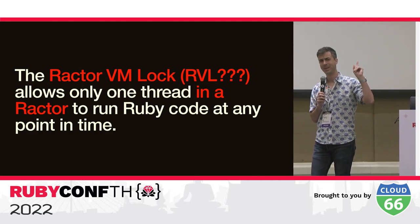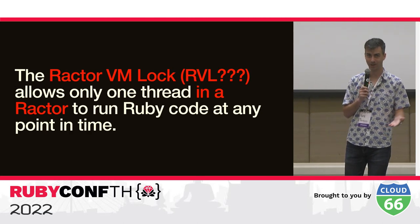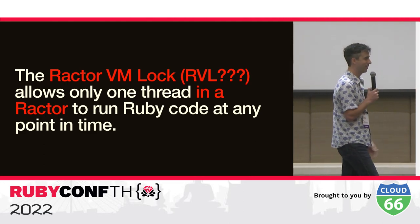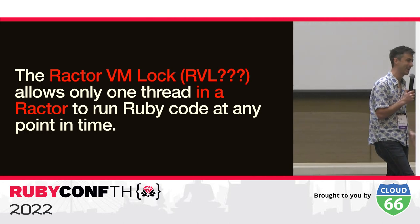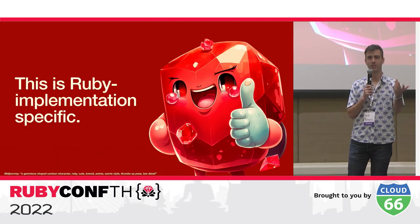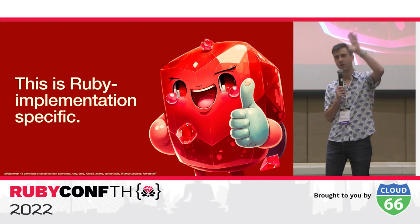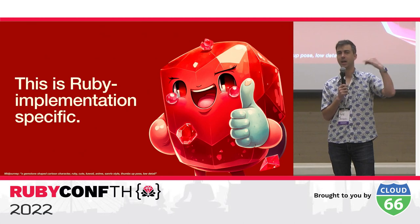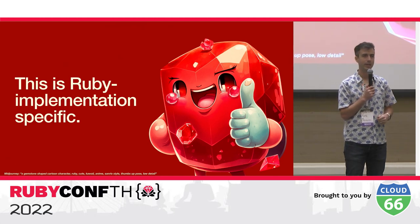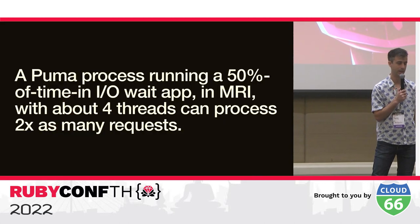In Ruby 3.0 we have Ractors, so technically there's no single global VM lock anymore — each Ractor has its own VM lock and can run code in parallel. But Puma only runs in one Ractor, so we still have an effective VM lock. This is CRuby-specific — it's not a language feature. TruffleRuby and JRuby don't have this limitation.